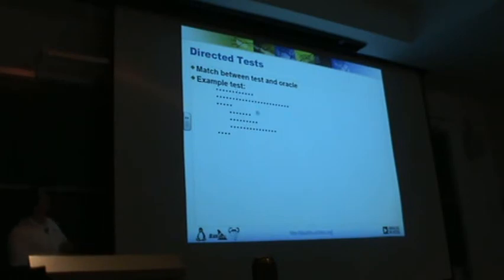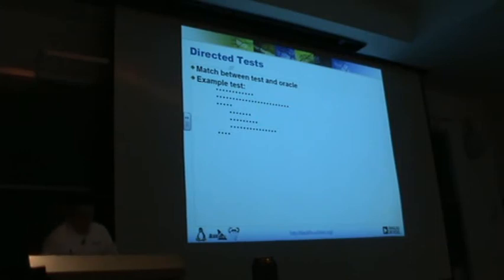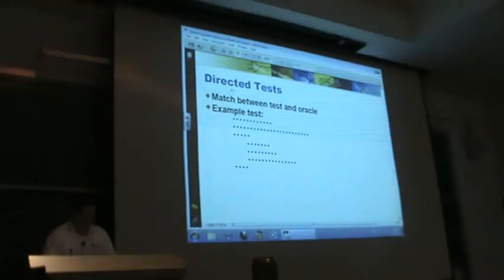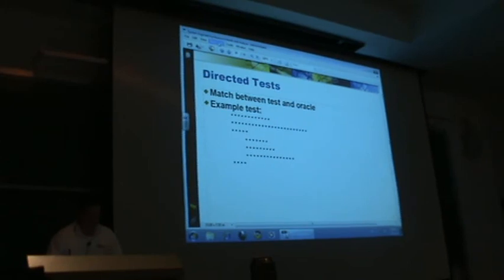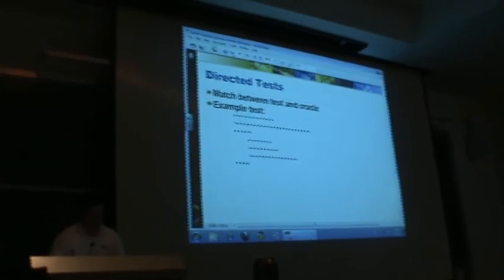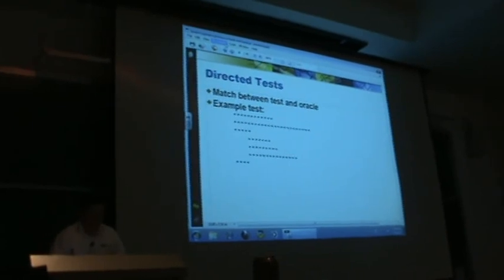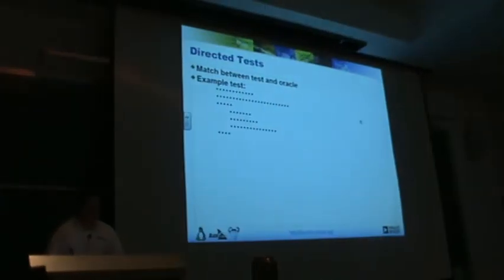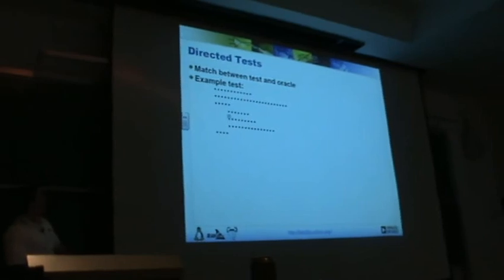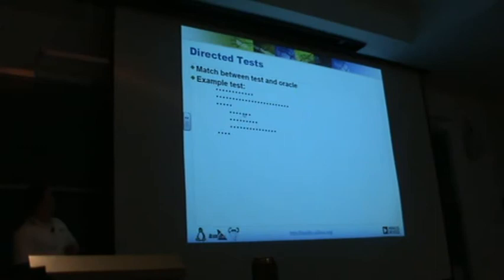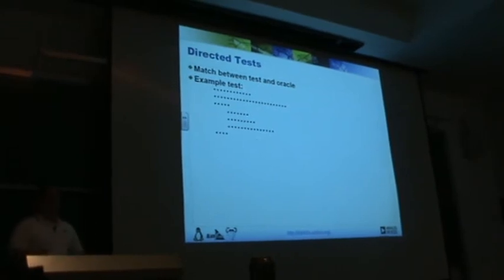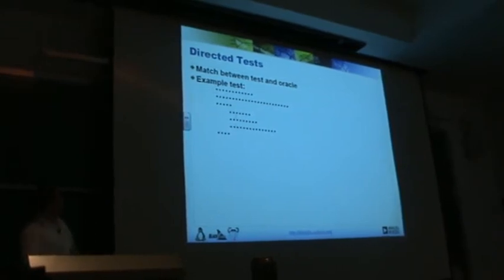So that's a directed test. This example did some initial setup — loaded four into a register, subtracted one, and made sure the result was three. It was basically written by hand just to test that single instruction. And then the output shows the word 'pass'.